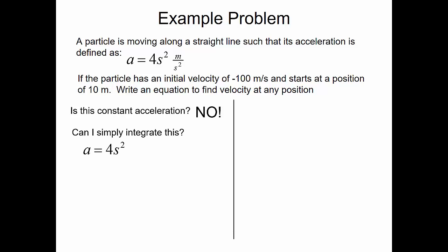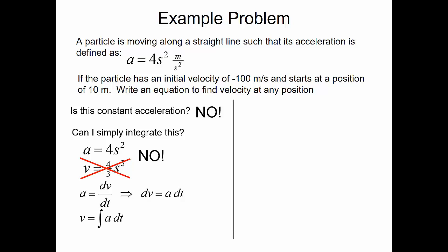Can I simply integrate a equals 4s squared directly? No, this is not valid because our acceleration in this case is not a function of time. Therefore, we can't just integrate the problem to find out what our velocity is. Remember that our acceleration is the first derivative of the velocity with respect to time, and if we solve for velocity, dv is equal to a·dt. Notice that there's no position anywhere in this equation. So I can't just integrate this and assume I'll get the correct answer. This is only valid if our acceleration is a function of time.